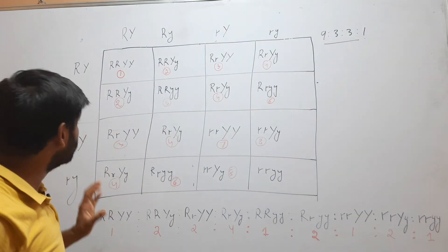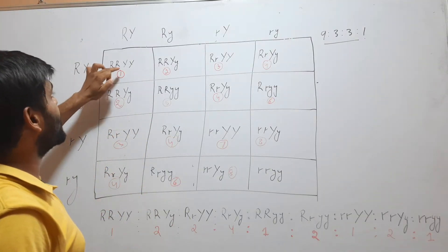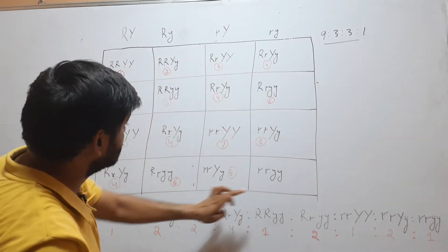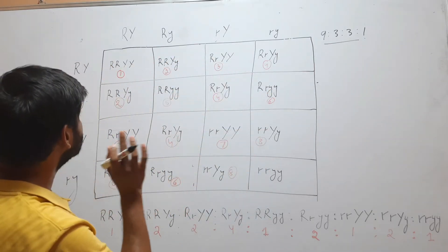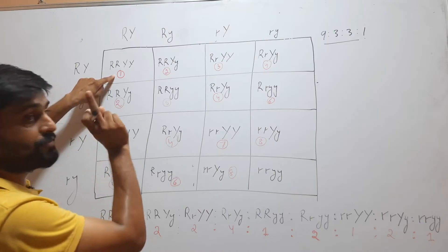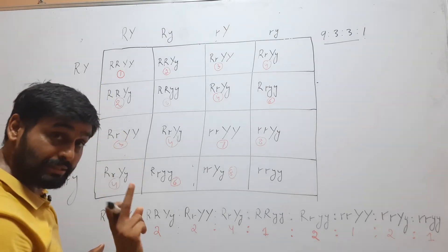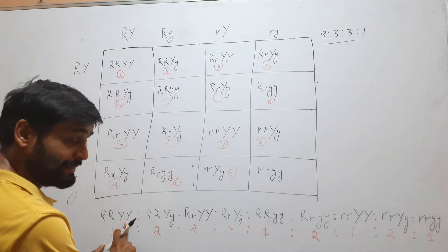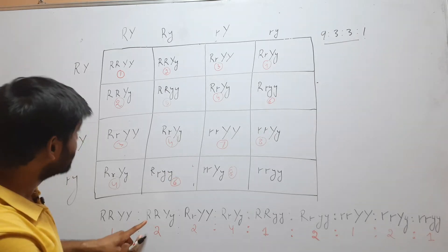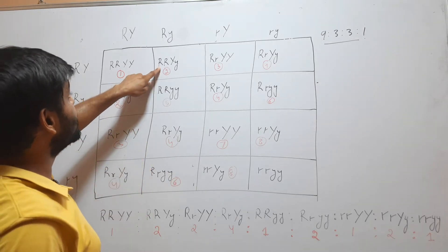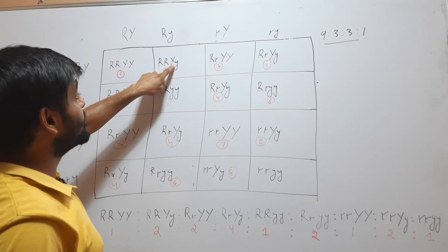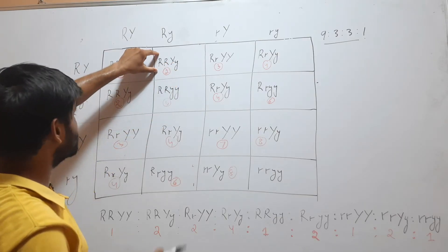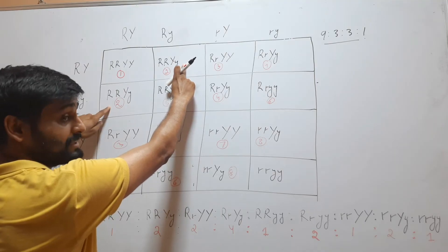So, what is the xenotypic ratio? The first combination is RRYY, and in the whole combination you will see this comes only 1 time. The next combination is RRYy. This combination comes here and here, so it comes 2 times. We will write 2 here.